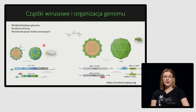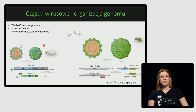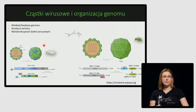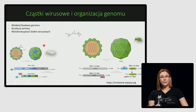Budowa genomów wirusów roślinnych jest podobna jak w przypadku wirusów zwierzęcych czy ludzkich – mogą to być genomy zbudowane z RNA i DNA, jednoniciowego i dwuniciowego. Większość dotychczas poznanych genomów wirusów roślinnych jest zbudowana z jednoniciowego RNA o dodatniej polarności. Ta dodatnia polarność oznacza, że takie RNA jest gotowe do syntezy białka – może wejść prosto na rybosomy i od razu syntetyzowane jest białko.